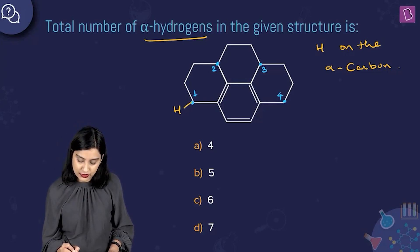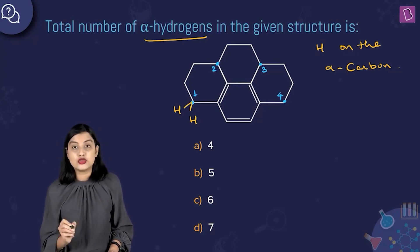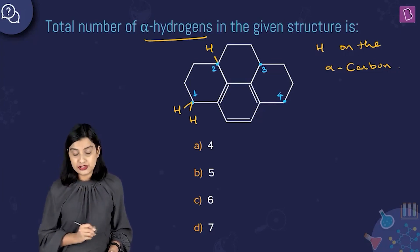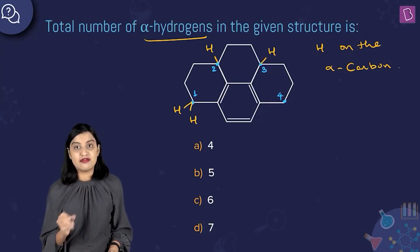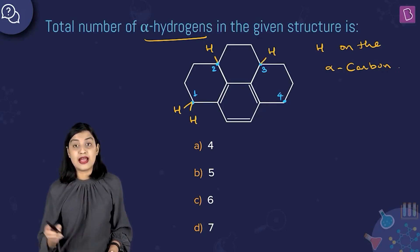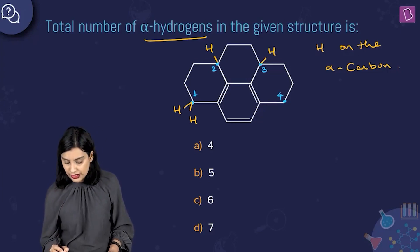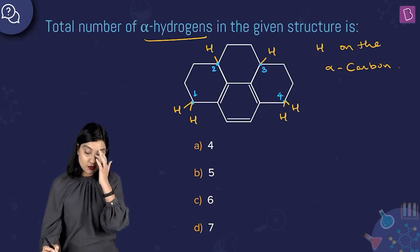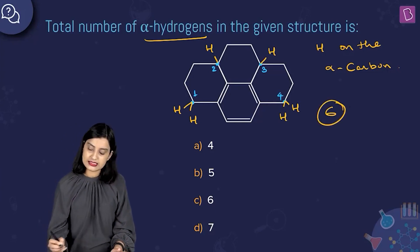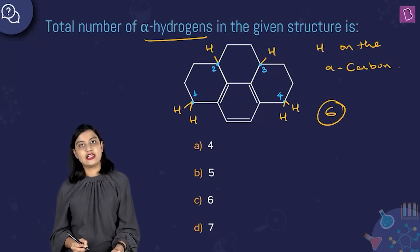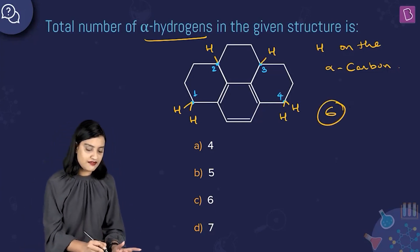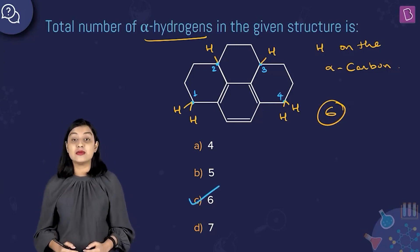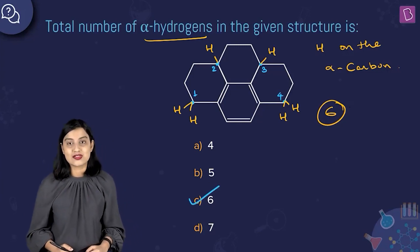On carbon number one you have two hydrogen atoms. On carbon number two you have one hydrogen atom. On carbon number three you have one hydrogen atom. And on carbon number four you have two hydrogen atoms. So the total is six alpha hydrogen atoms, and option C, 6, is the right answer to this question.